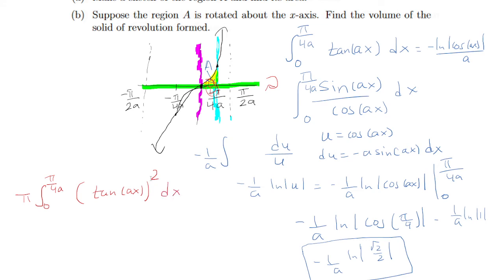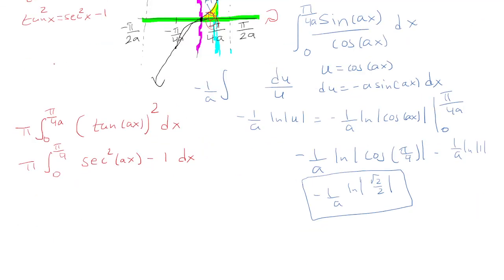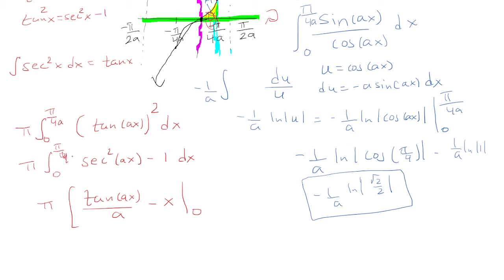Now tangent squared — I don't know the antiderivative of tan²(x) directly, but I do know that tan²(x) + 1 = sec²(x), so tan²(x) = sec²(x) − 1. For us, that means sec²(ax) − 1. The antiderivative of sec²(ax) is tan(ax)/a by the chain rule, minus x. So the antiderivative of the integrand is tan(ax)/a − x, evaluated from 0 to π/4a.